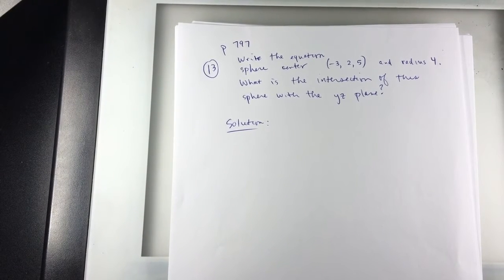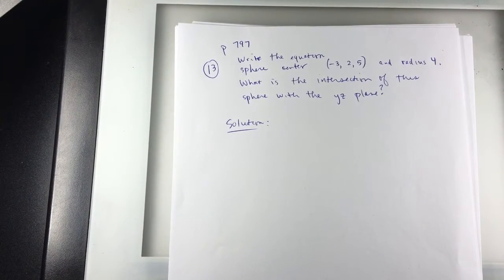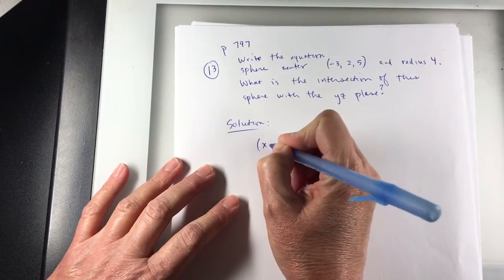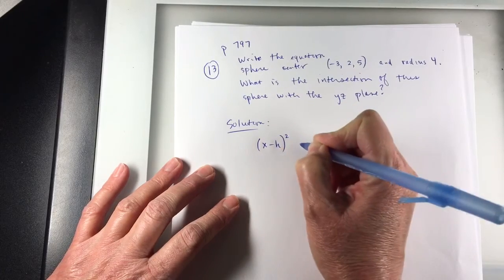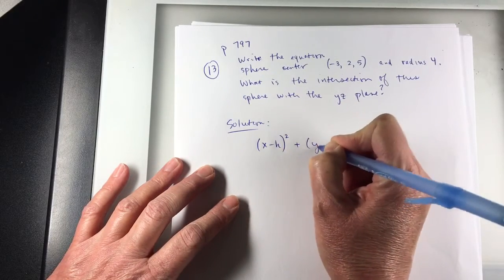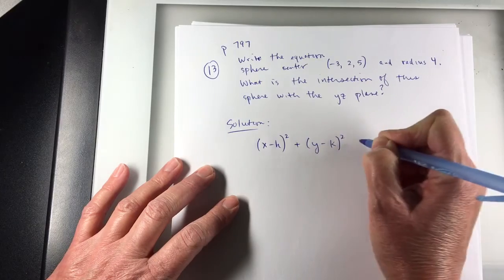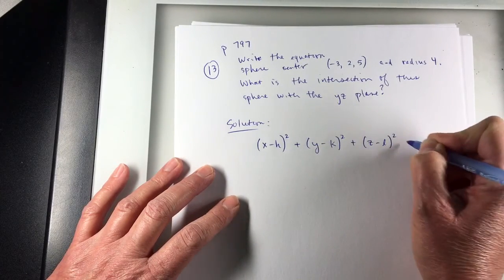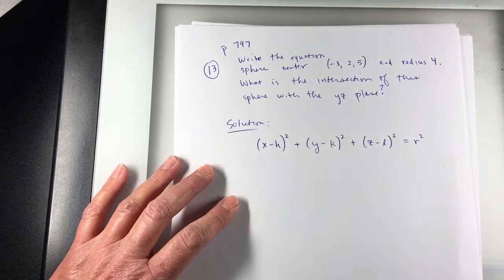So for this problem, I need the formula for a sphere, which is (x - h)² plus (y - k)² plus (z - l)² equals r².